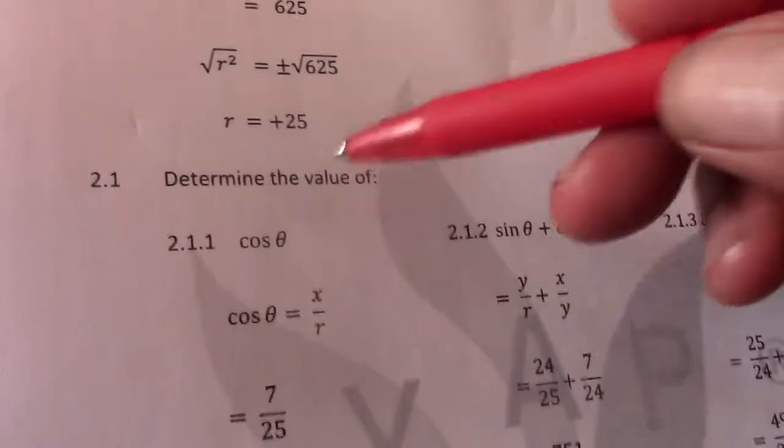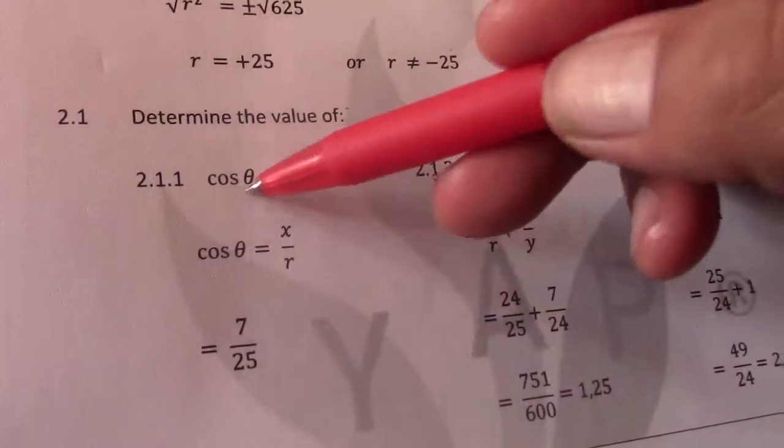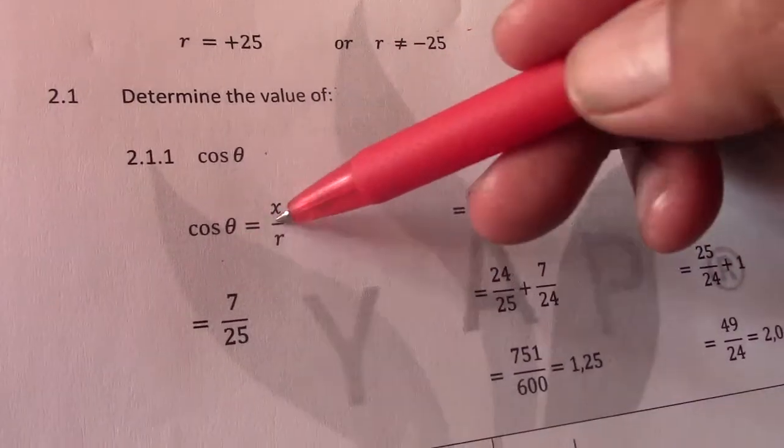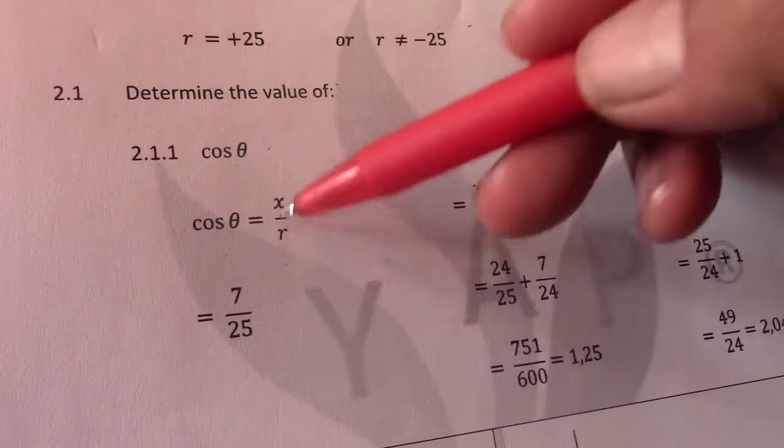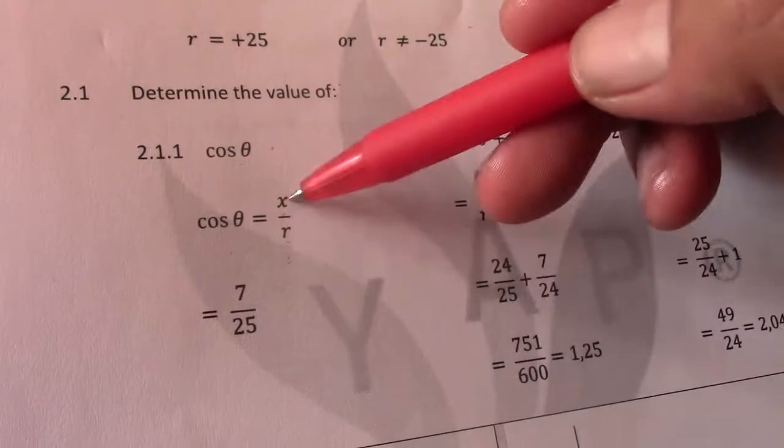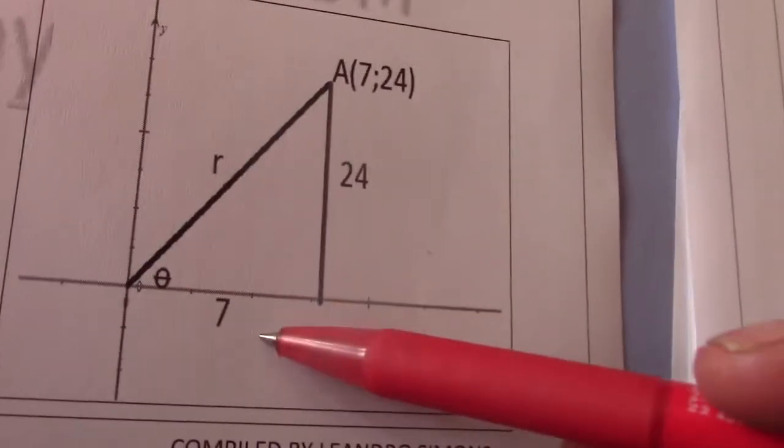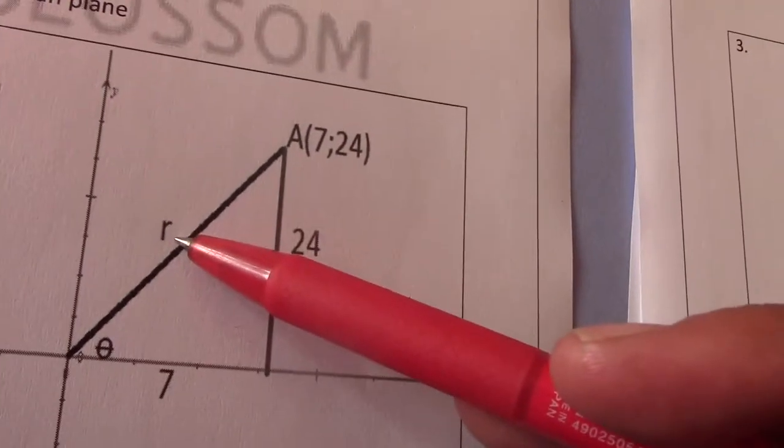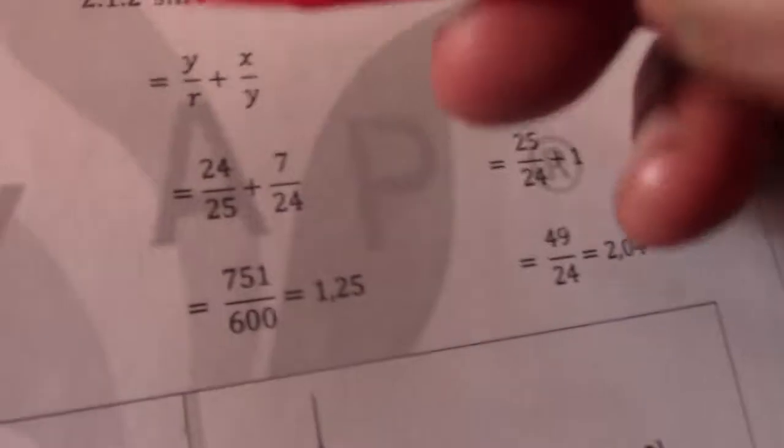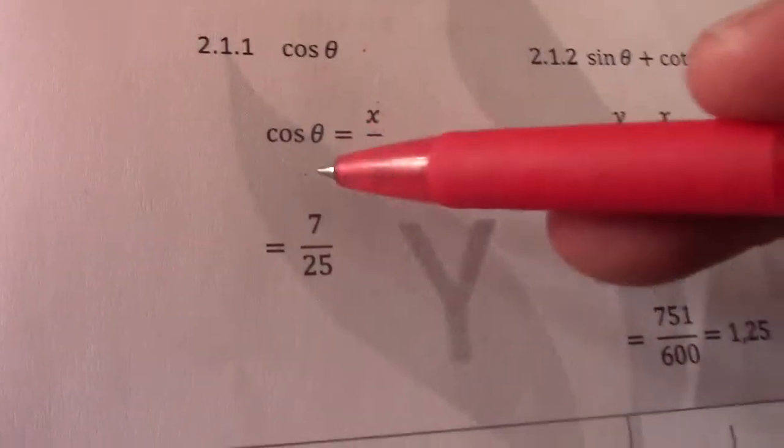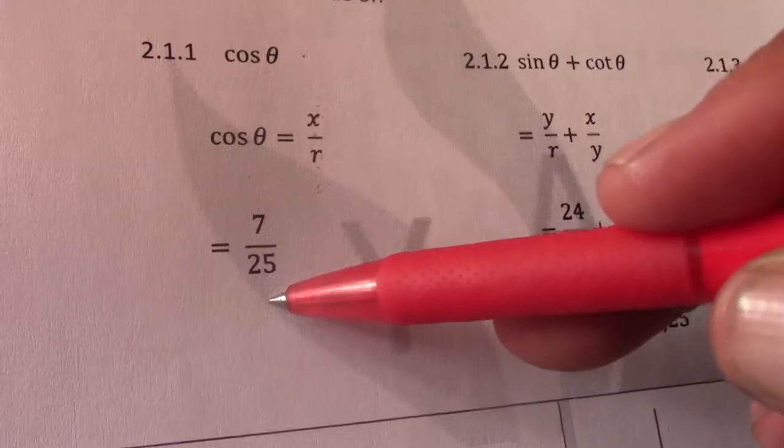Now I have my X, Y and R values so I have to determine the value cos theta I should know is X over R. No need to write this but you should know cos theta equals X over R. My X value according to my drawing we go here is 7 and my R value I found was 25. So therefore cos theta equals 7 over 25.